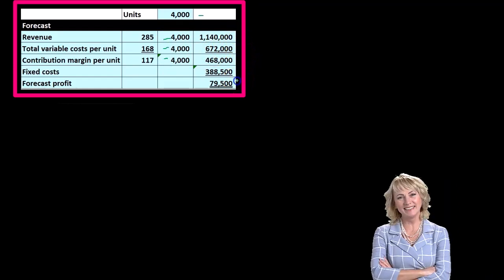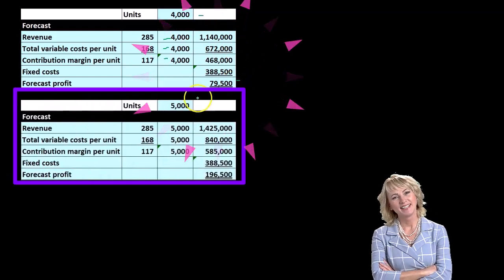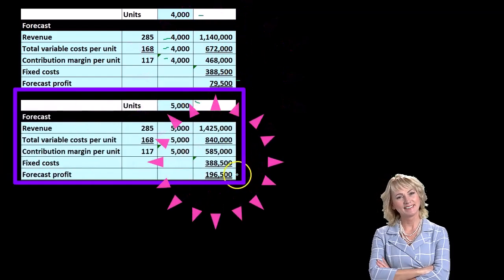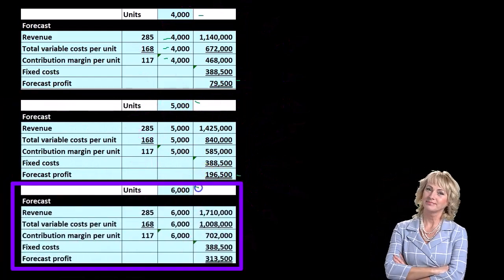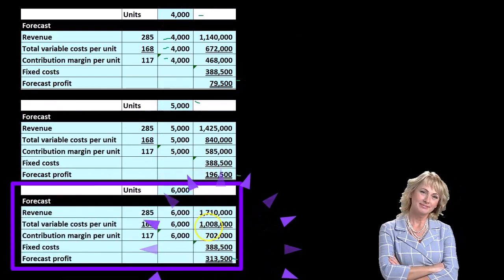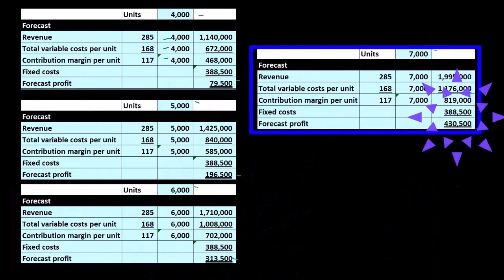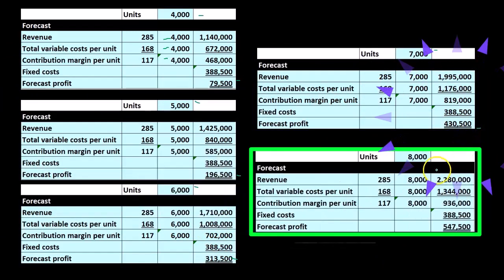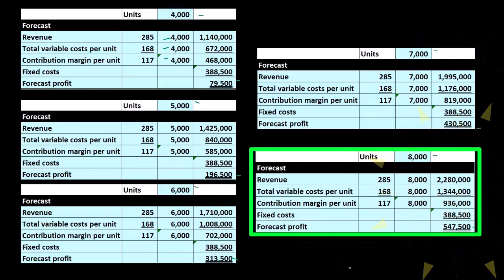The beauty of this worksheet is that we can calculate profit much more easily by changing just one number — the units. If we change to 4,000 units, the new bottom line is 79,500. Change to 5,000 units, here's the new bottom line. Change to 6,000, 7,000, or 8,000 units — everything adjusts automatically, and we can run side-by-side comparisons.